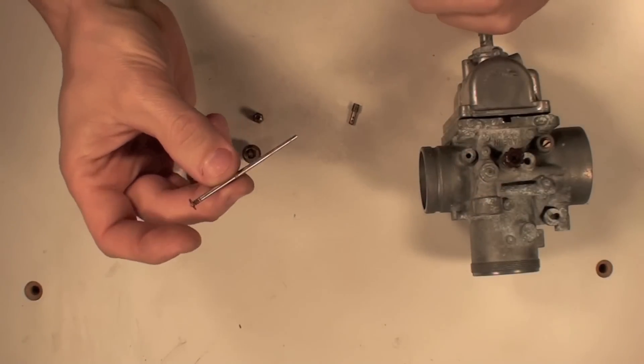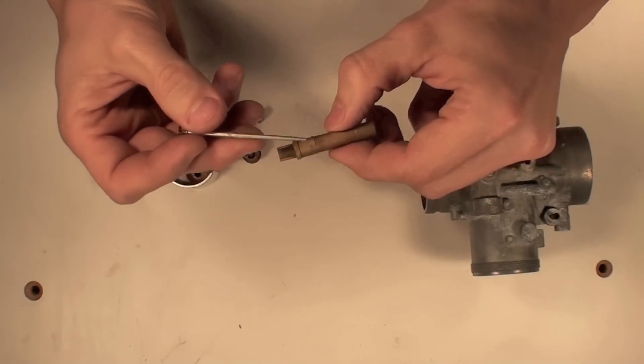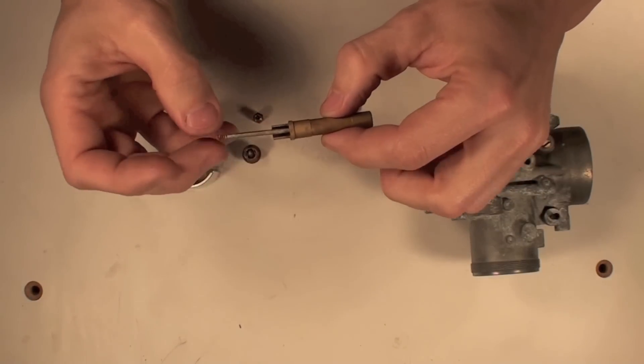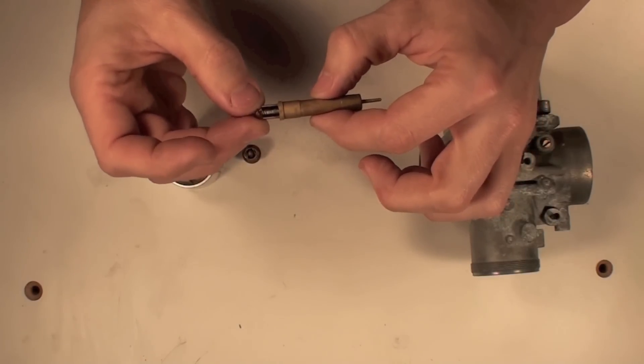This is the jet needle, like a needle, right? And this is the needle jet. The jet needle, when you adjust the throttle, actually slides up and down inside the needle jet.